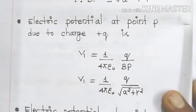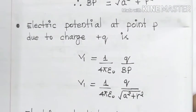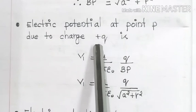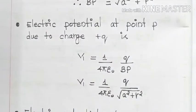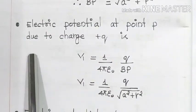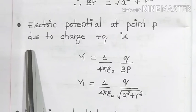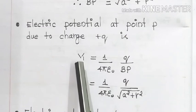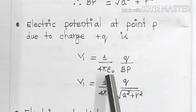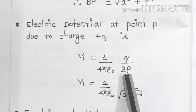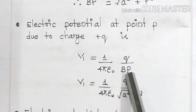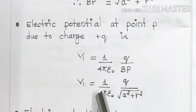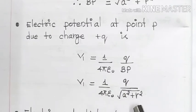Electric potential at point P due to charge plus Q: we know the general formula for electric potential due to a point charge, V = 1/(4πε₀) × Q/r. So here also, V₁ is equal to 1/(4πε₀) × Q divided by the distance BP. We have already calculated the value for BP, so V₁ is equal to 1/(4πε₀) × Q divided by square root of a² plus r².